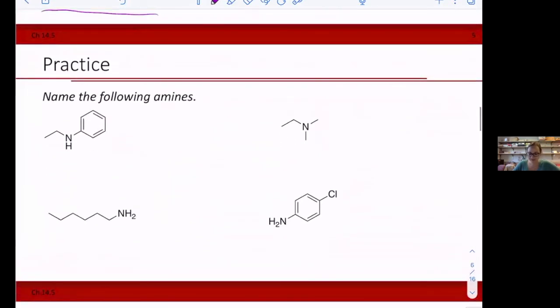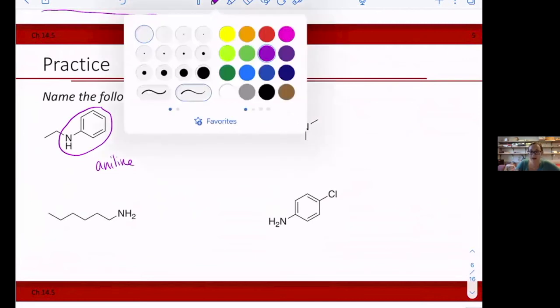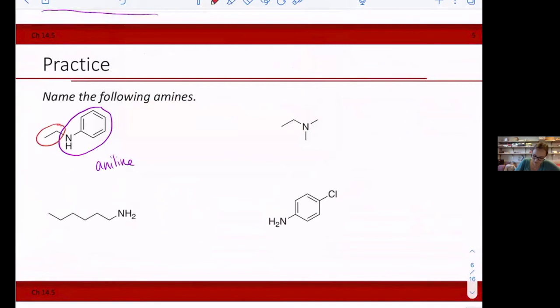Okay, let's practice these now. So name the following amines. So this one is starting off with one of those aniline problems that I was just talking about. So we have here, our base is called aniline. And then we have to say what else is on there. So we have an ethyl group here. So I'm going to say at the N position, there's an ethyl group. So the name would then be N-ethyl aniline.